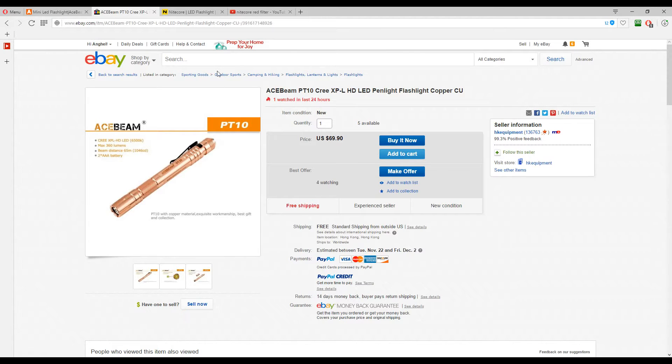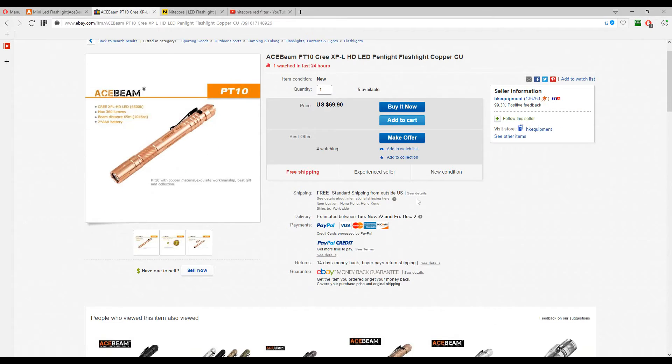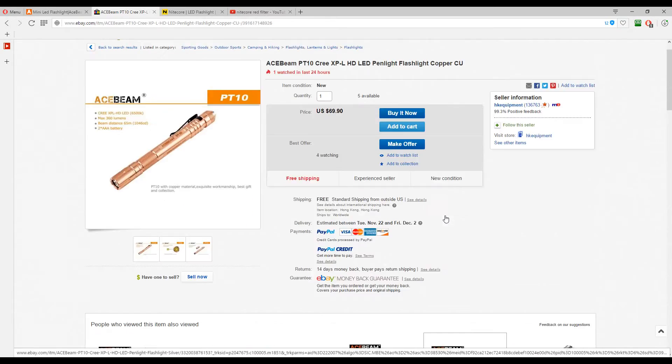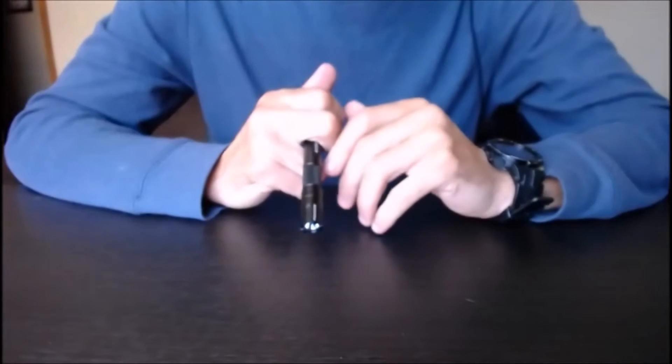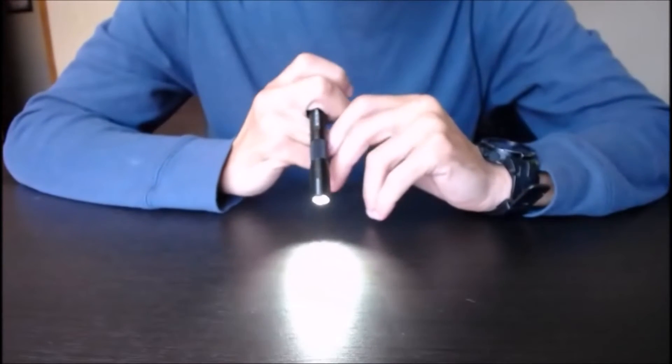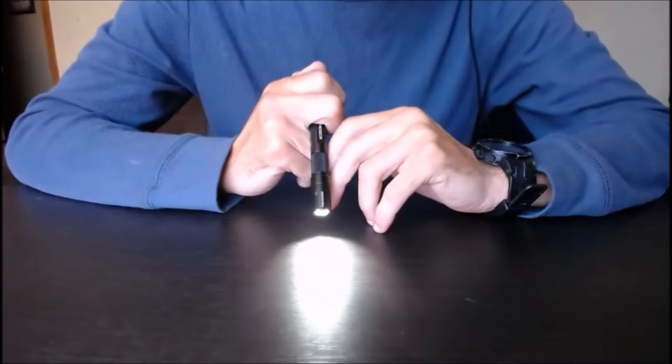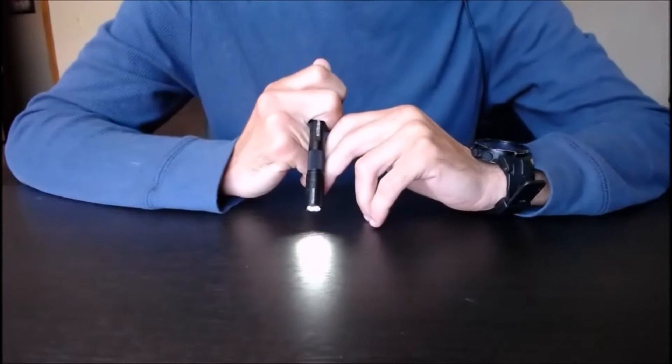I also found out that the same guy on eBay, the HK Equipment, is also selling the Acebeam PT10 the copper version. It will run your $69.90 and says here will come in by airmail, so it should take another seven days to get it, which is not bad at all. And hopefully I get another one, get to review it for you.